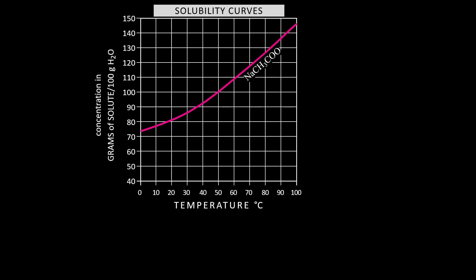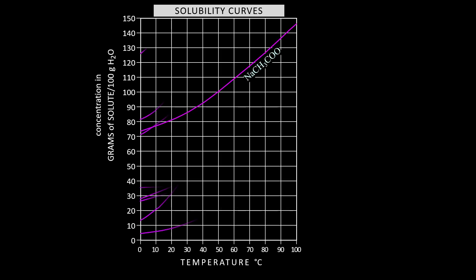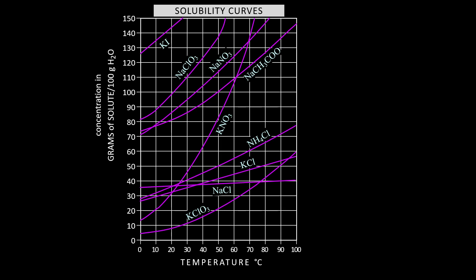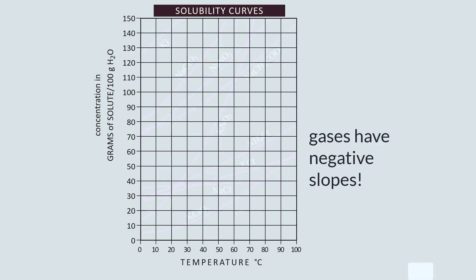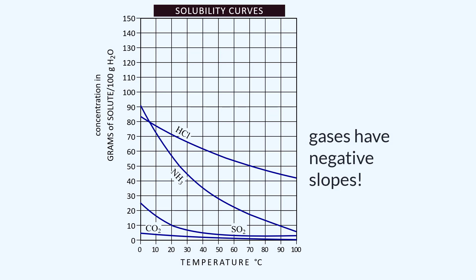We've been talking about sodium acetate, but there are lots of other compounds that will dissolve in water, and they all have positive slopes. This is what we would normally see in the graphs of solubilities of solids in water. But what about gases? Gases have negative slopes.